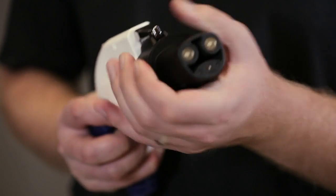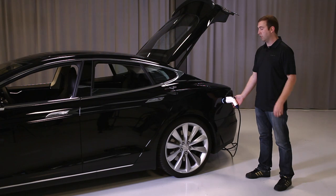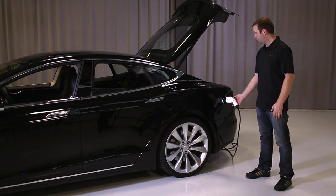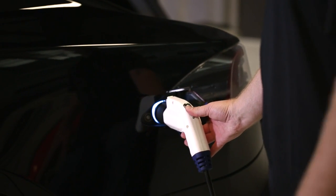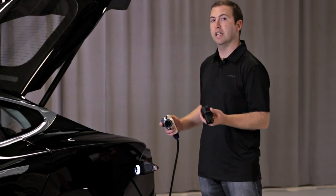Plug it directly into Model S like you would at home. It'll turn green just like normal, and when you're ready to go, press and hold this button like you would. That'll pop this out. Pull the whole thing out as one assembly and then remove the adapter.